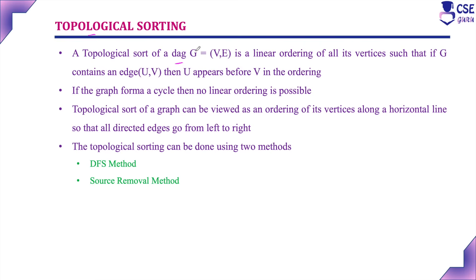Topological sort of a DAG — that is, directed acyclic graph G = (V, E) — is a linear ordering of all its vertices such that if G contains any edge (U, V), then U should appear before V in the ordering. If the graph forms a cycle, a linear ordering is not possible. Topological sorting can be viewed as ordering vertices along a horizontal line so that all directed edges go from left to right — simply, a linear ordering of vertices.